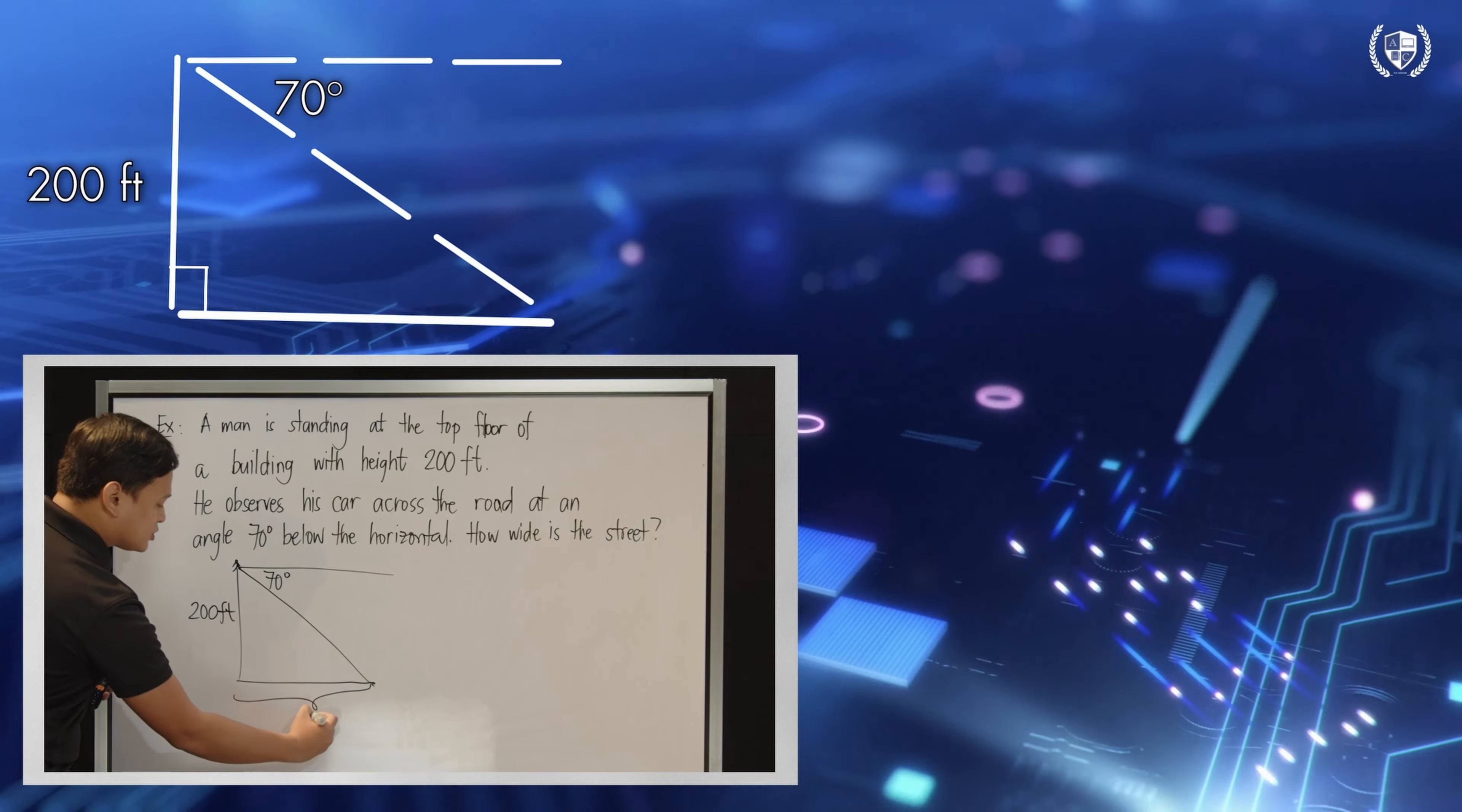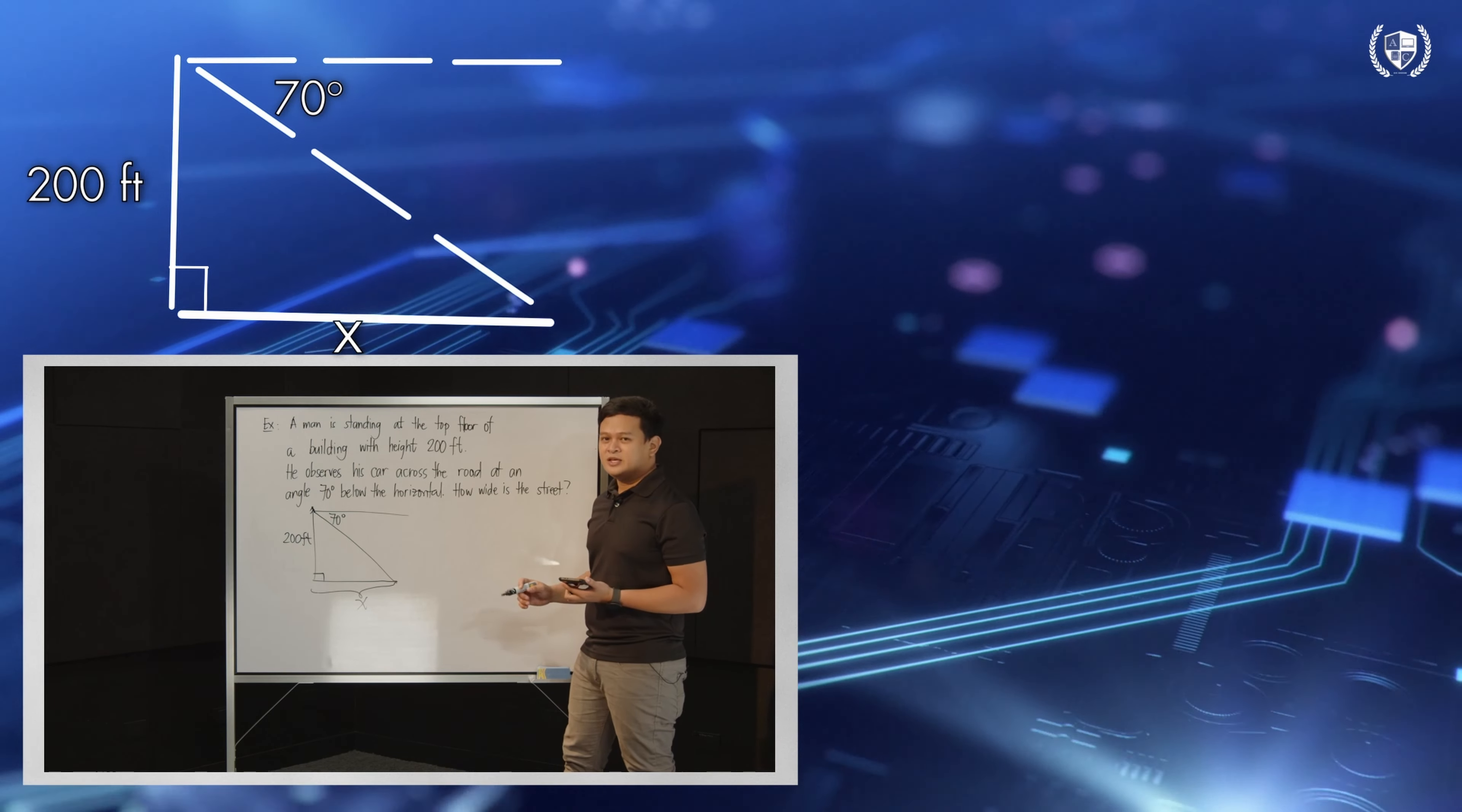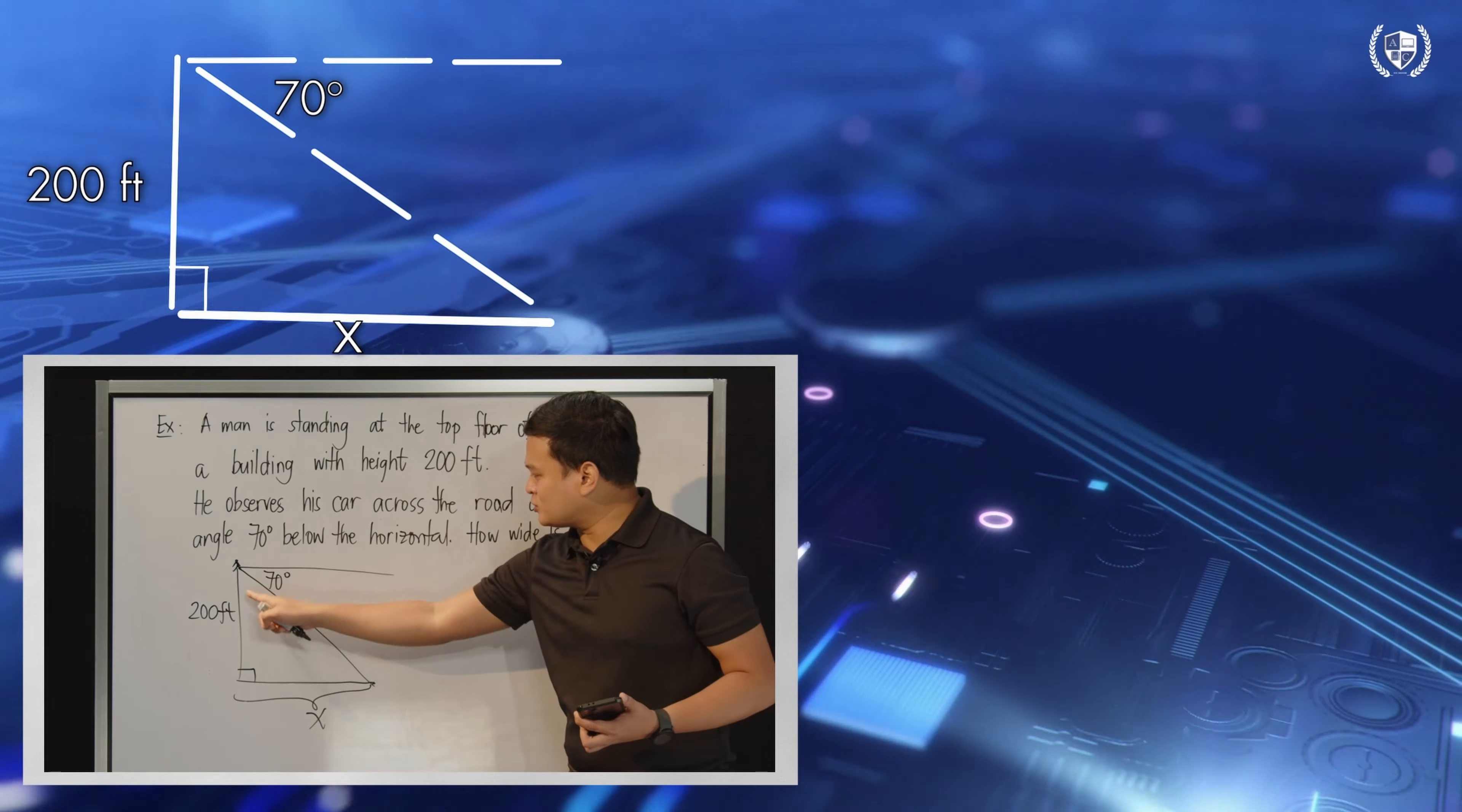What we want to know is how wide our road is. So, let me use x for that missing value. And then, let us form our equation. However, if you notice, the 70 degrees is not inside our right triangle. We can't use it right away. So, to do that, you need to think of an idea - how can we use the 70 degrees to get values for these two angles.